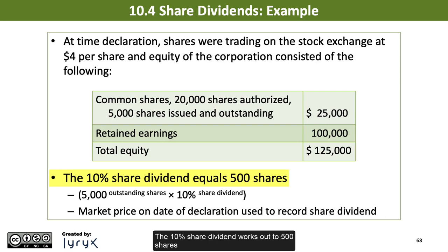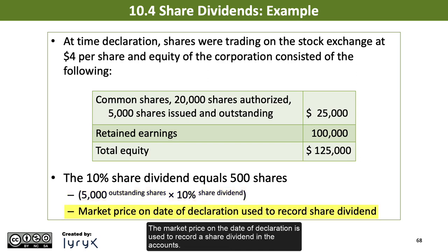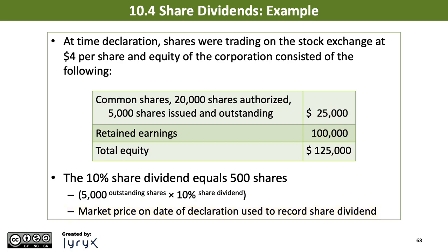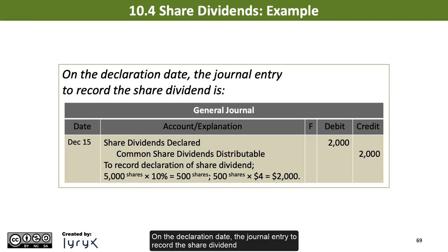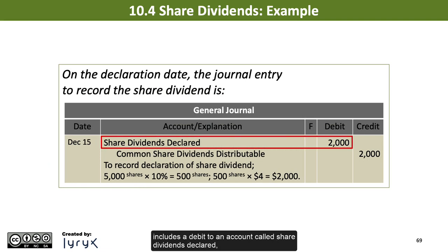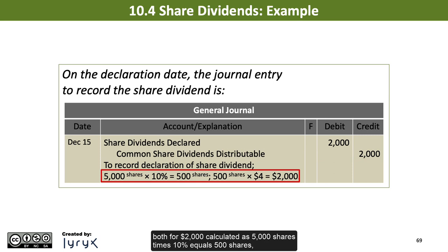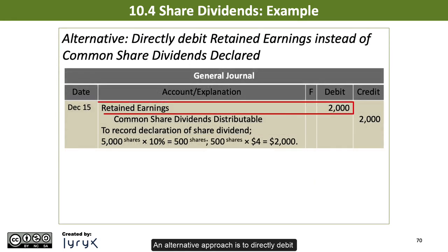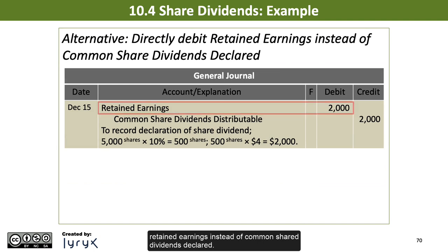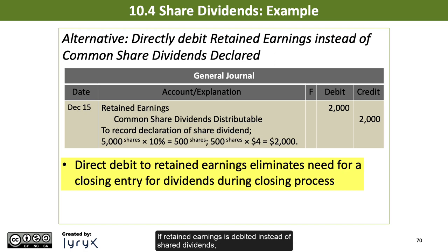The 10% share dividend works out to 500 shares, calculated as 5,000 outstanding shares times the 10% share dividend. The market price on the date of declaration is used to record a share dividend in the accounts. On the declaration date, the journal entry includes a debit to share dividends declared and a credit to common share dividends distributable, both for $2,000 — calculated as 5,000 shares times 10% equals 500 shares, multiplied by the $4 market price per share. An alternative approach is to directly debit retained earnings instead of share dividends declared. If retained earnings is debited instead, a closing entry is not required for dividends during the closing process.